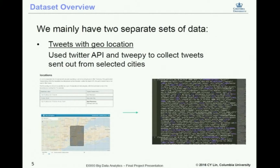The other kind of data is tweets — Twitter posts. We use the Twitter API and Tweepy to collect tweets sent out from certain locations in our selected cities. We have a tool called bounding box where we draw a box for our selected cities and get the coordinates of those boundaries, which are used as filtering options to collect streaming tweets from those areas. Finally, we dump the tweets into JSON format for later analysis.